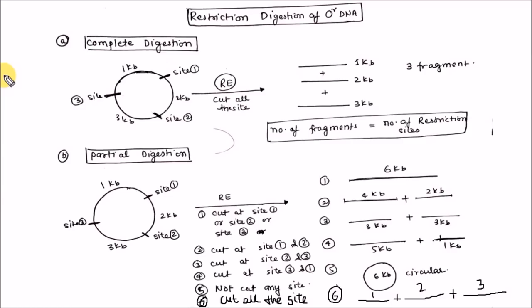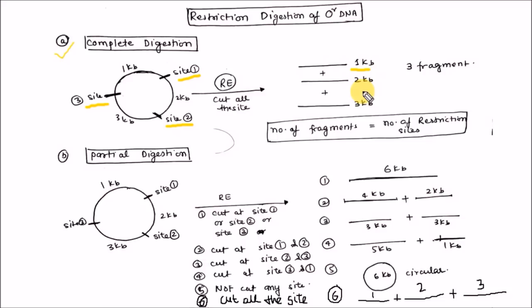Let's see the restriction digestion of circular DNA. In complete digestion, all the restriction sites present in the circular DNA are cleaved by the restriction enzyme. For example, if three restriction sites are present — one, two, and three — treating this circular DNA with restriction enzyme will cleave all the sites and you will get three fragments: 1 KB, 2 KB, and 3 KB. The number of fragments in the complete digestion of circular DNA is equal to the number of restriction sites.